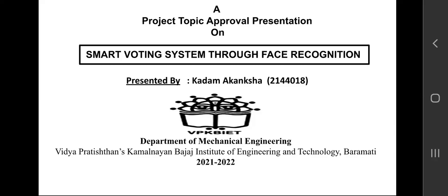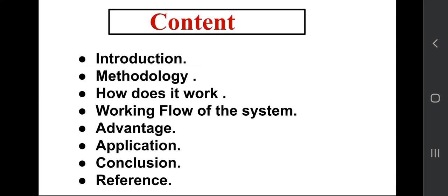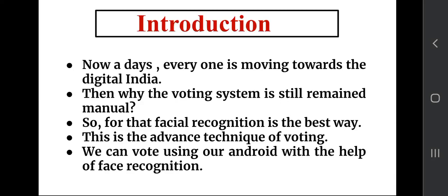Hello everyone, I am Akanksha Bharat Kadam. I would like to welcome all of you. In this video we will discuss about smart voting system through face recognition. Our contents are: introduction, methodology, how does it work, working flow of the system, its advantages, applications, conclusion, and references. Nowadays in India, two types of methods are used for voting: the first is the secret ballot paper, and the second is the EVM — electronic voting machine — which has been used since 2003.